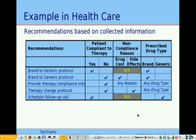Then we would have the non-compliance reason. Here we have two cases: one is because of the drug cost, and the other reason is because of side effects. Then we would have the category of the drug types being prescribed, which would be either brand drugs or generic drugs. Then the recommendations are rules that are a function of the answers taken. Note that if the patient is compliant with the therapy, then we would not ask the non-compliance reason because that would not be appropriate.